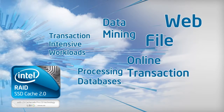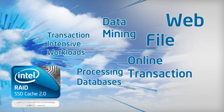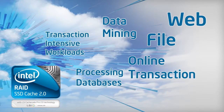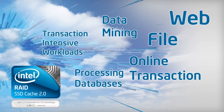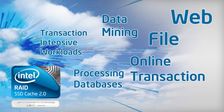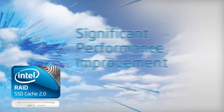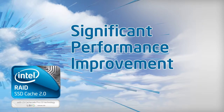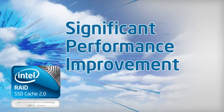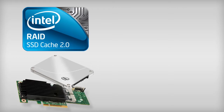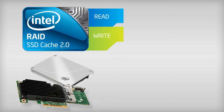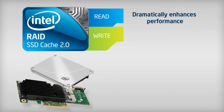This relieves the primary hard disk drive array from time-consuming transactions, which creates more efficient hard disk operation, reduced latency, and accelerated read and write speeds. The result is significant performance improvement for many server applications. Intel SSD Cache 2.0 is the industry's first software solution that offers both read and write controller-based caching on SSDs, dramatically enhancing the performance gains achieved by the previous generation of SSD cache hardware.